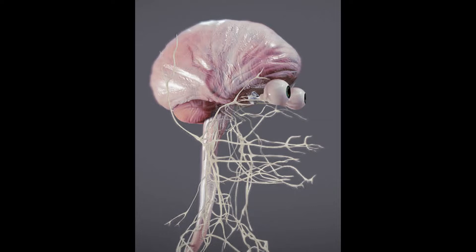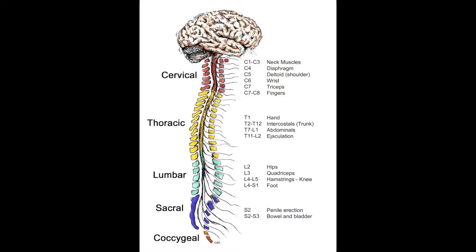What are the nervous system functions? There are three main ones. The first is sensing — collecting data from the environment, both the external environment around us and the internal environment inside of us. The second is interpreting — processing data and formulating a response. And then acting — telling the body to perform the response from what it interpreted and initially sensed.